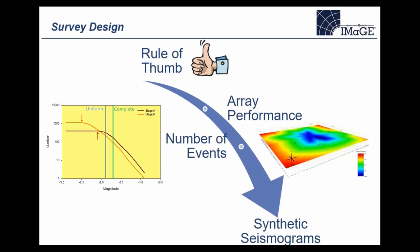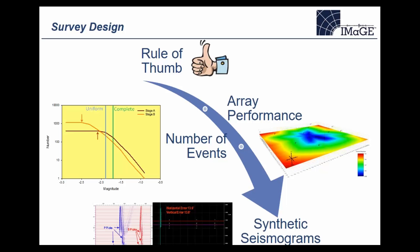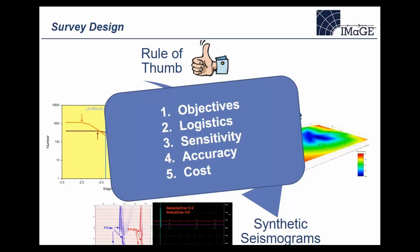The most sophisticated level of survey design involves generating synthetic seismograms for a particular example and then processing those synthetics to assess the expected array performance. Some concluding tips for survey design: start with objectives — for instance, is fracture height particularly important to define? Then look at logistics to find monitoring geometry options, compute sensitivity and accuracy for different arrays and rank them, and finally consider the cost of different scenarios.